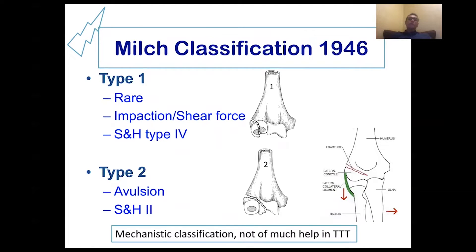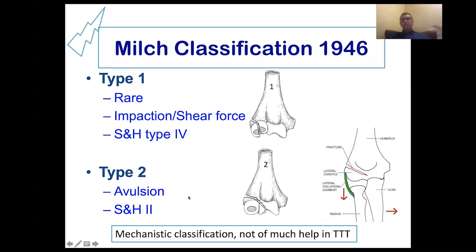The most common classification we know is Milch classification. Type one is a shear force that passes through the epiphysis of the ossific nucleus of the capitulum, and type two is an avulsion fracture where the fracture line passes through the trochlea. Type one is diagnosed as Salter-Harris type four and type two as Salter-Harris type two.